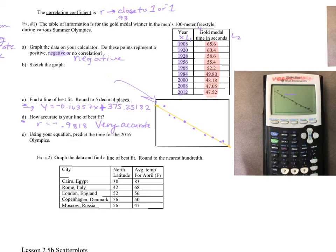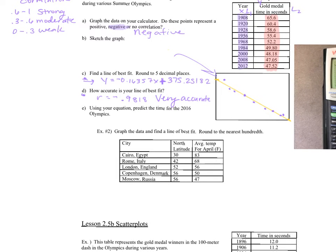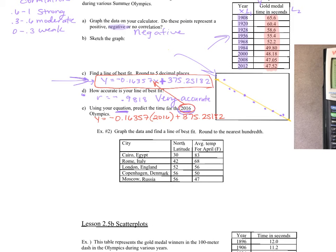It says: using your equation, predict the time for the 2016 Olympics. The years were our x's, so we're literally taking 2016 and plugging it in for x. So: y = -0.16357 × 2016 + 375.25182. Plug that into your calculator — don't try to do it by hand. It comes out to 45.49 seconds. That would be the prediction for 2016.